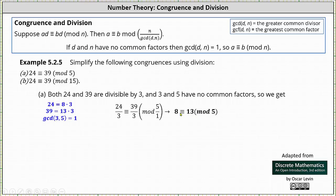Notice when we divide both 8 and 13 by 5, we do get a remainder of 3. And now for the second example, we have 24 is congruent to 39 mod 15.